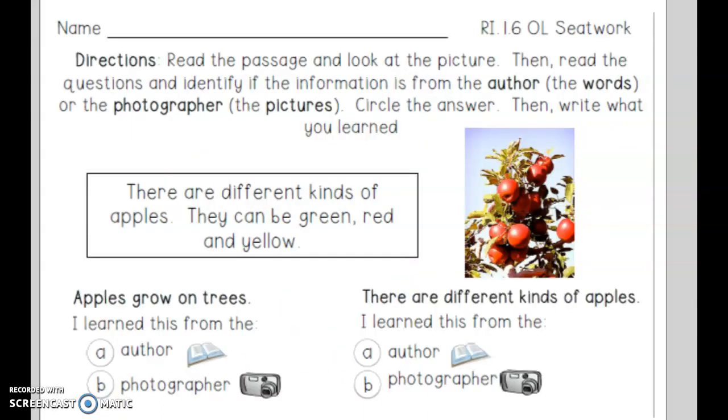Let's check your work from yesterday. Yesterday you began by reading about apples. So this piece of information says apples grow on trees. Well, looking back in the passage, it says there are different kinds of apples. They can be green, red, and yellow.